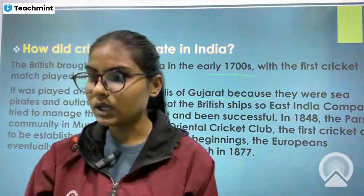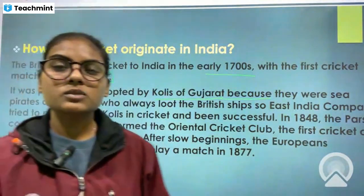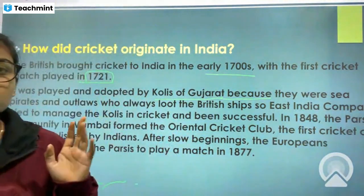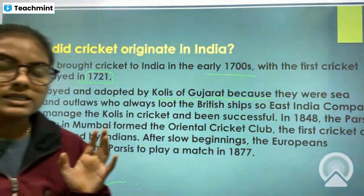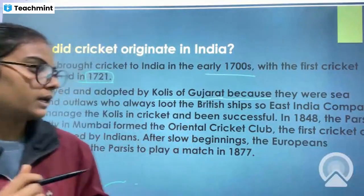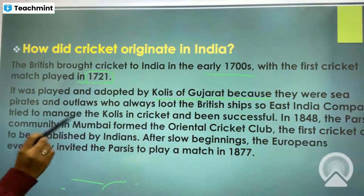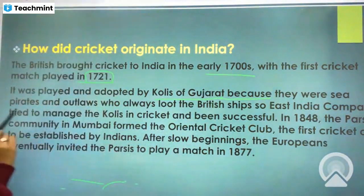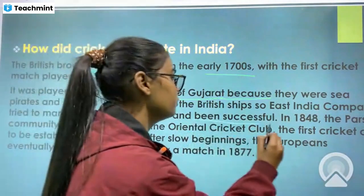The Kolis were known to loot British ships, so the East India Company tried to manage the Kolis through cricket, and they were successful in doing so.